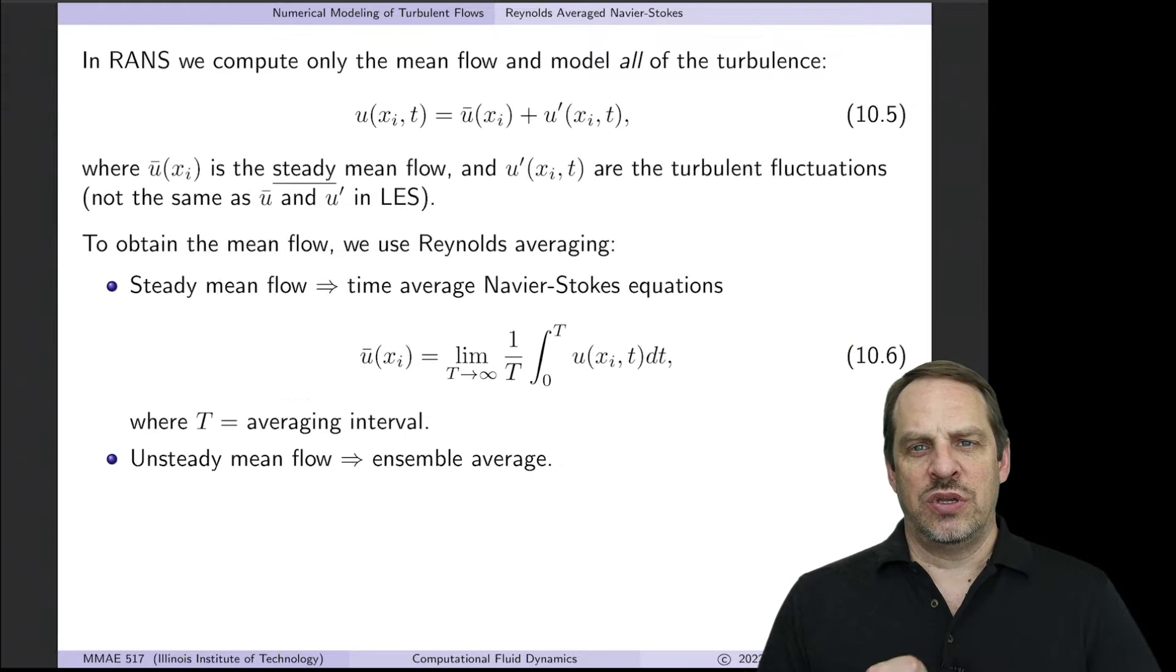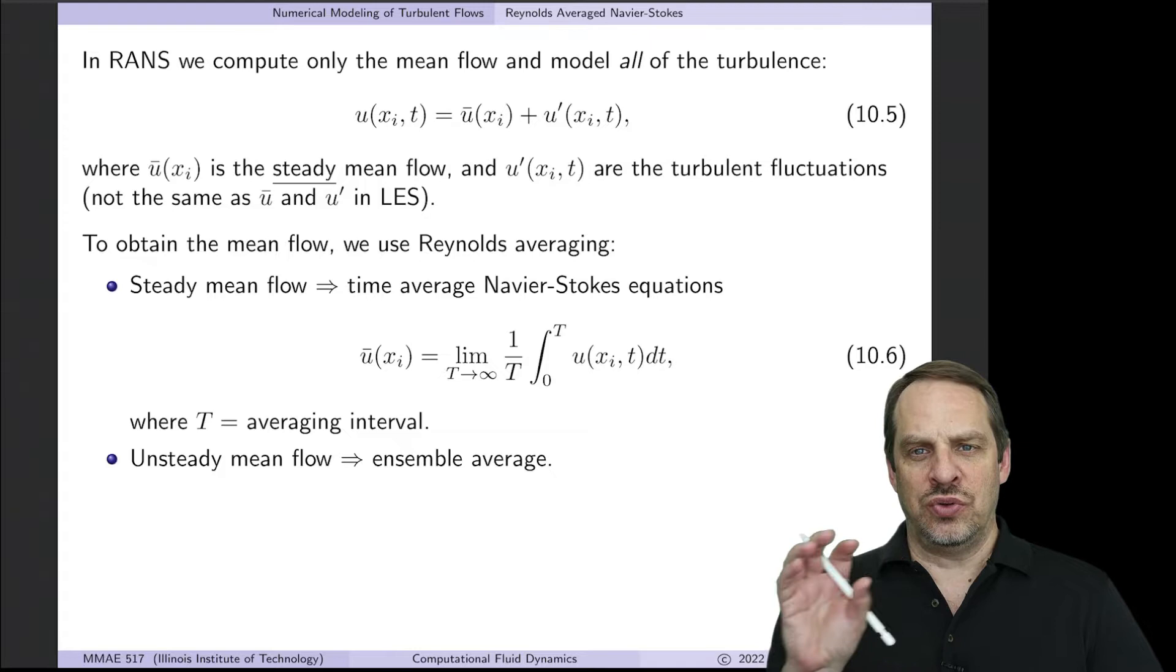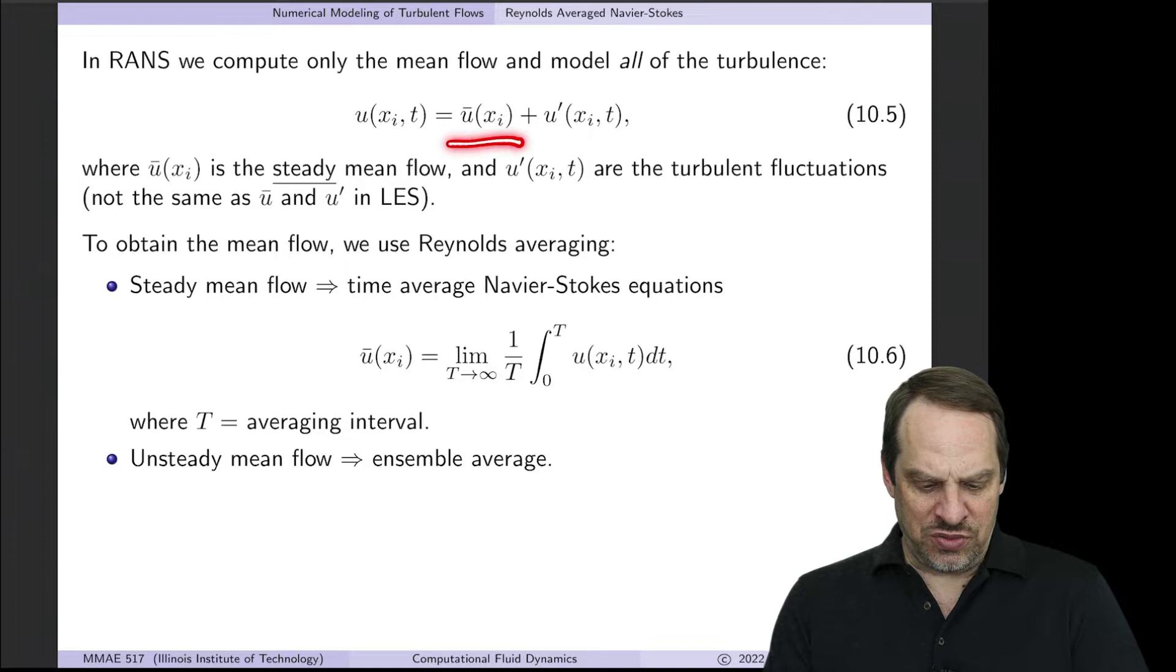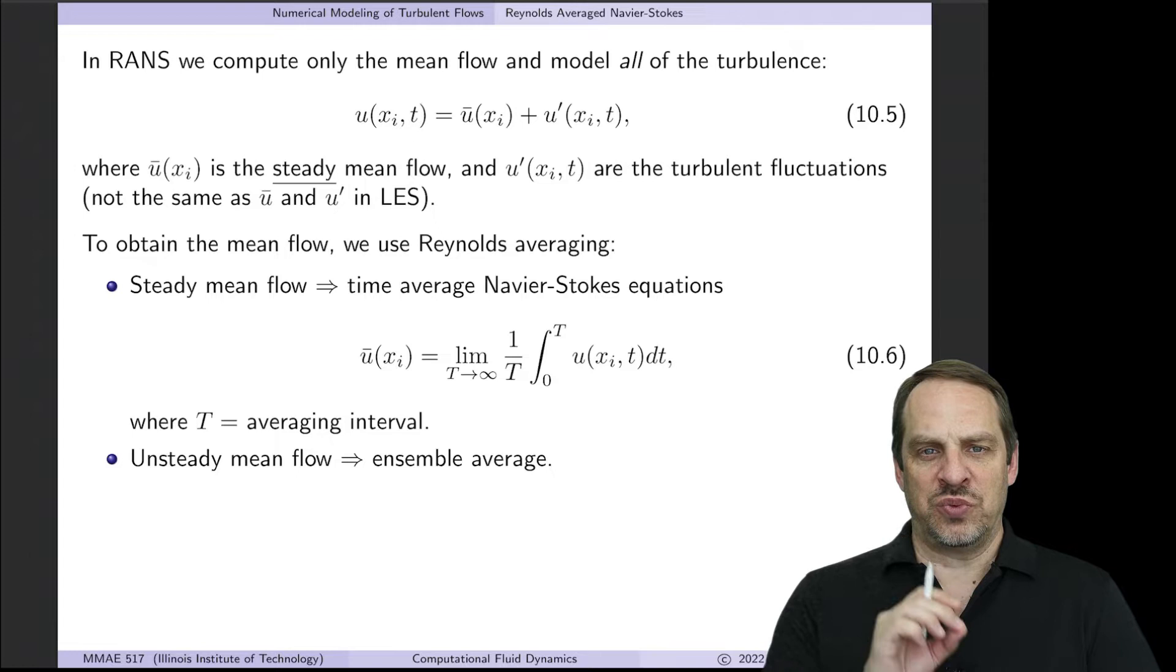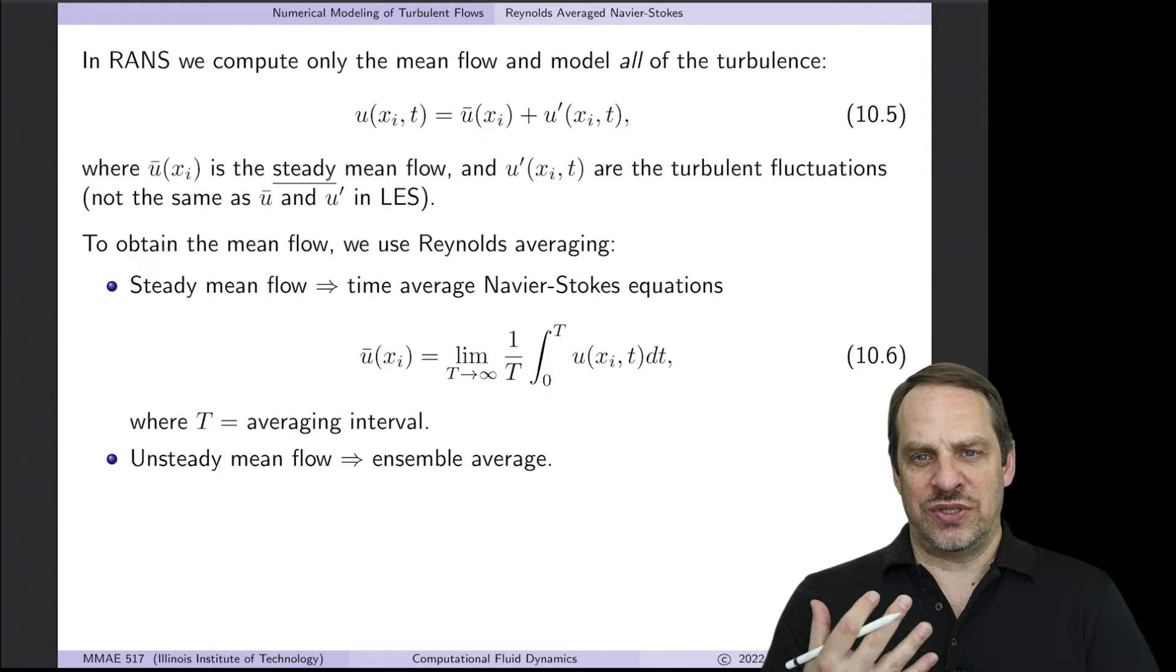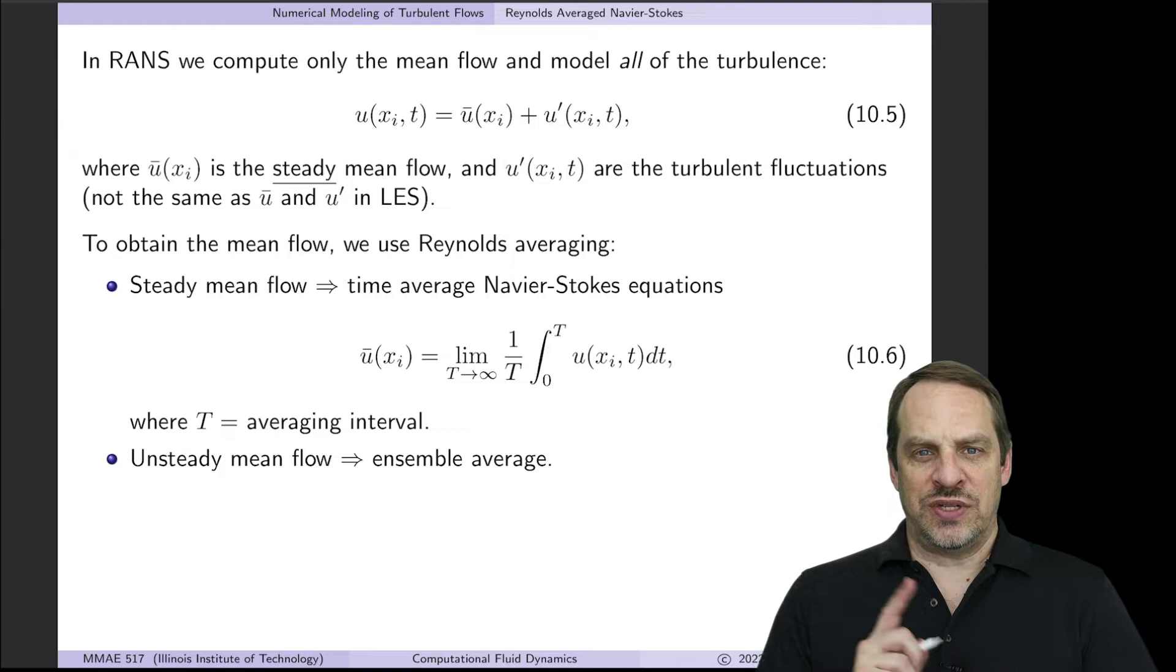Similar to large eddy simulation, we're first going to decompose the flow into two parts. So the velocities and the pressures will be decomposed into a mean flow, U-bar, and the turbulent fluctuations, U-prime. Now the big difference as compared to LES is that U-bar is truly a mean flow. It's a steady mean flow, and all of the turbulence is being captured by U-prime.